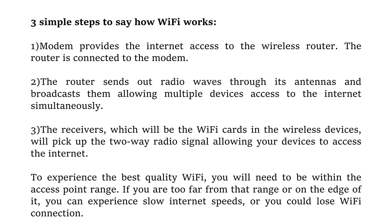The receivers are the Wi-Fi cards on the wireless devices that pick up the two-way radio signals, allowing your devices to access the Internet. So these are the three simple steps of how Wi-Fi works: the modem provides Internet access to the router, the router sends out radio waves, and the wireless devices receive the two-way radio signals to get Internet access.